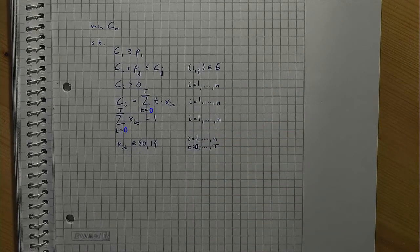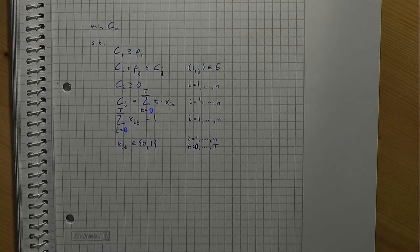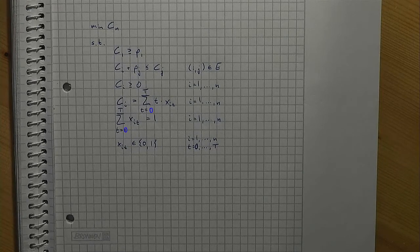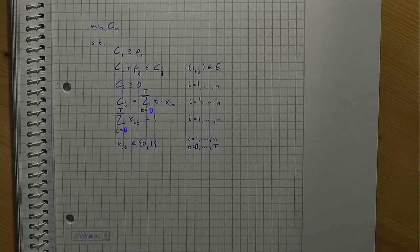As shown in a previous video on eliminating variables, we can now eliminate the c-variables from the model to get an alternative model formulation that is still linear. When comparing the two modeling approaches — the approach using continuous c-variables and the approach using binary x-variables — the first approach seems to be the better one. The first model is a linear program, which is good when it comes to solution procedures. The benefit of the second approach becomes obvious when further aspects are to be added to the model.